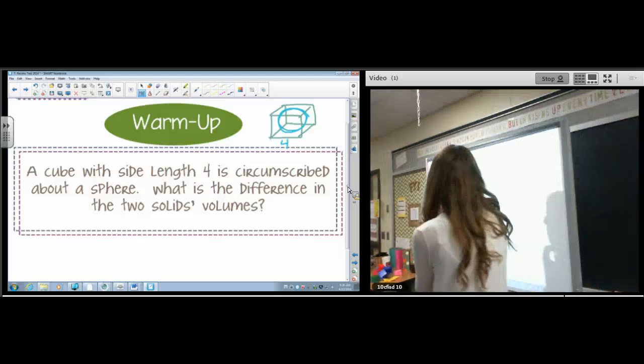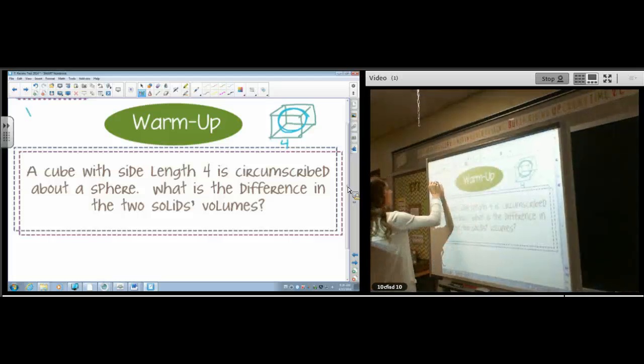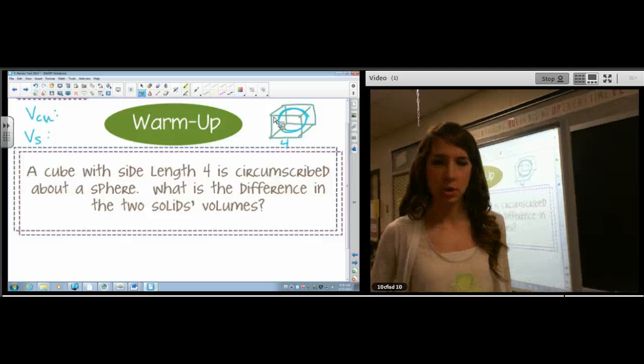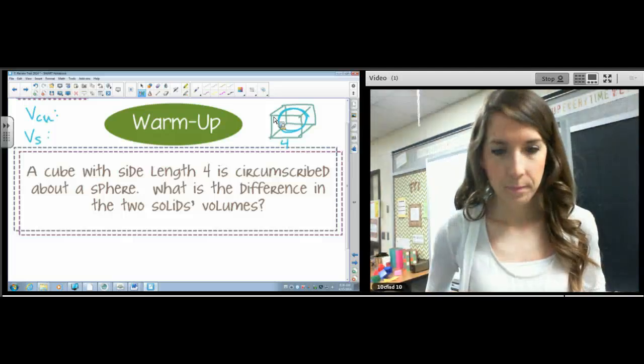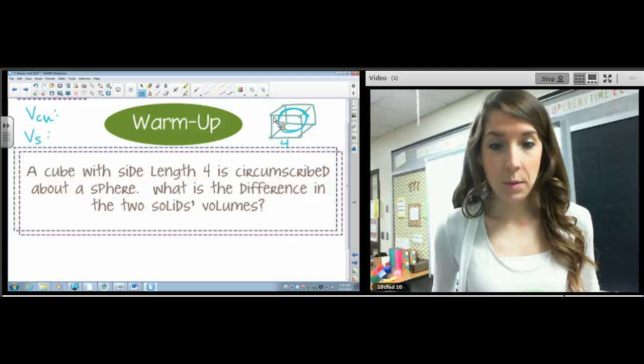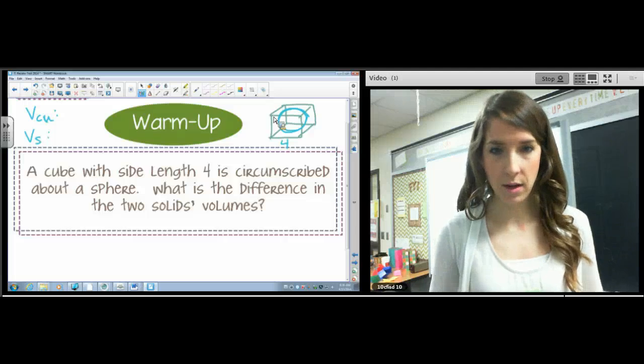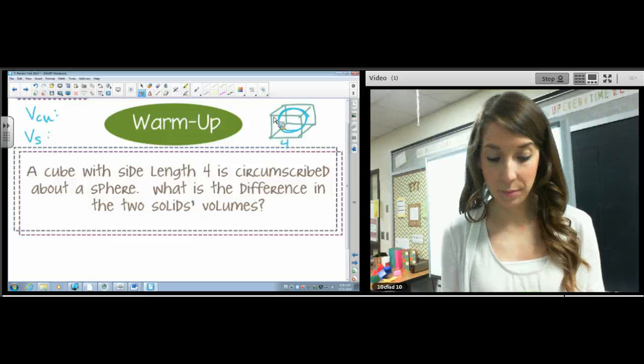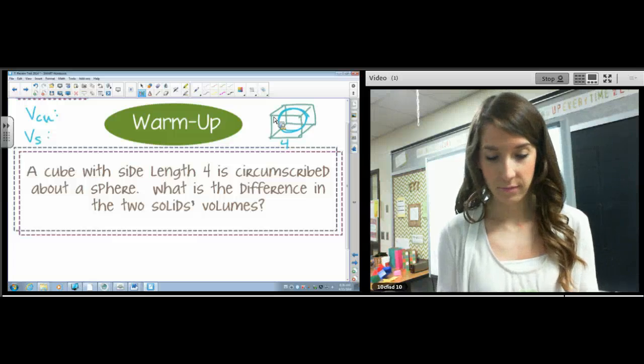So what's the difference in the two solids' volumes? We would find the volume of the cube and the volume of the sphere. And difference, of course, means subtract, so we will subtract them. The radius would be 2. Yes Jenny, the radius would be 2. So the volume of the cube is going to be simply 4 cubed.